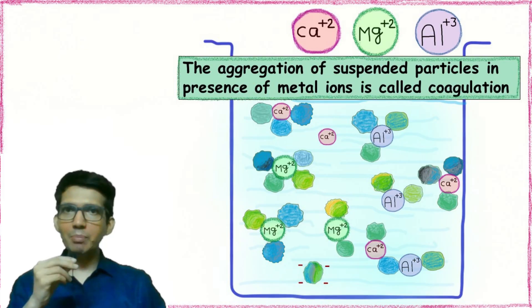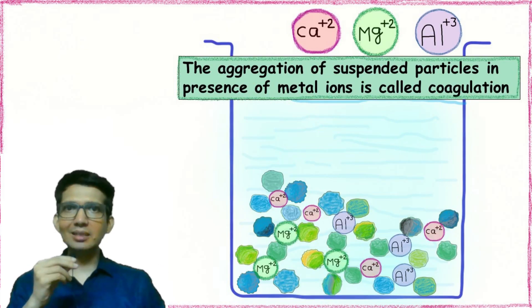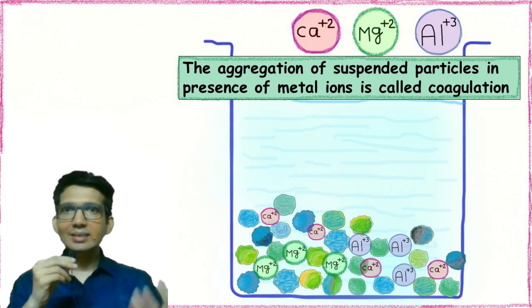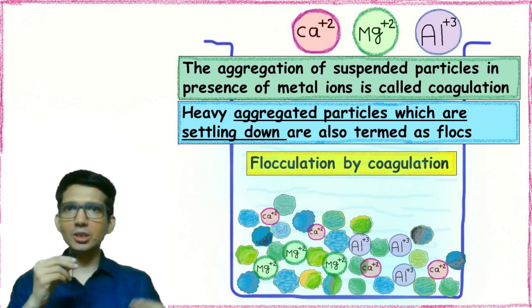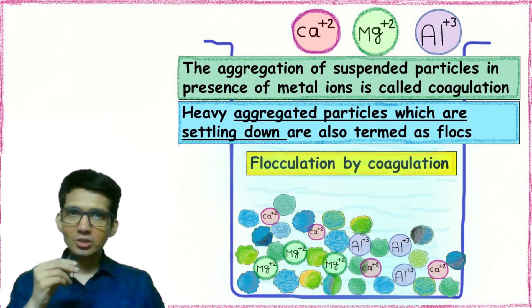Once the aggregate becomes heavy, it settles down. These heavy aggregated particles which are settling down are termed as flocks. And the mechanism is termed as flocculation by coagulation. This means we have formed these flocks by the addition of coagulants like metal ions.